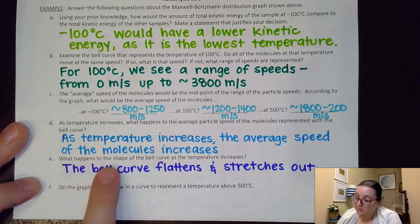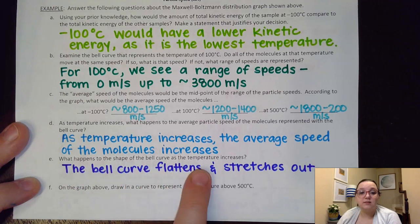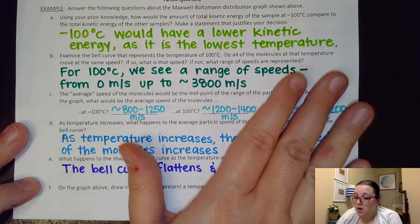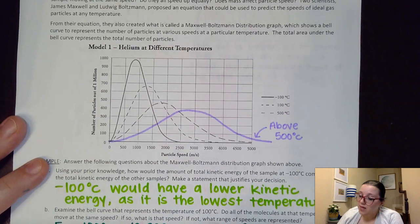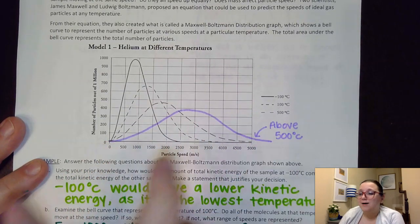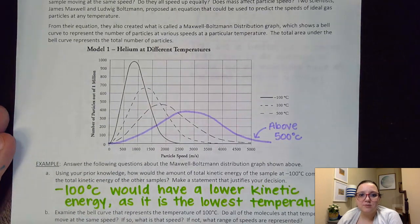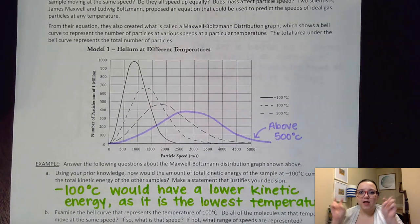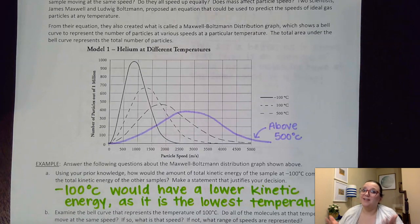But then it asks what happens to the shape of the bell curve as the temperature increases. And hopefully we notated that the bell curves are flattening and stretching out. Last year some of my students were joking that these look like the flatten the curve COVID-19 graphs and I'm like yeah they kind of do